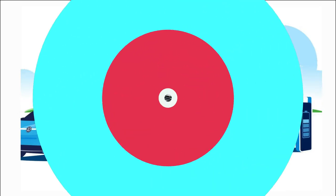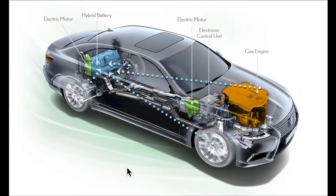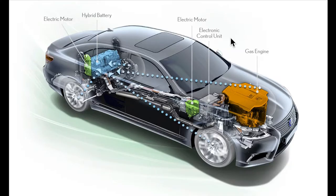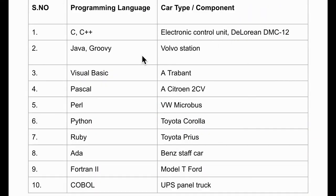Inside a car there are so many components, and in some of those components programming languages are used. For example, the electronic control unit (ECU) is one of the main components where programming languages are used. In this table you can see on the left-hand side different types of programming languages, and on the right-hand side the car components that use those programming languages.